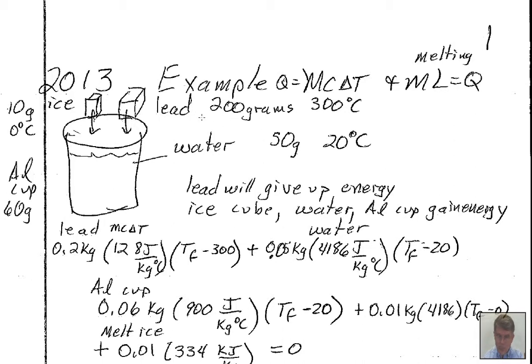The lead is our hot object. Its temperature will go down — energy will leave the lead and go into the water, the aluminum cup, and the ice.